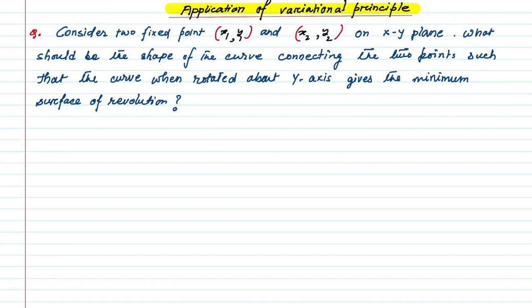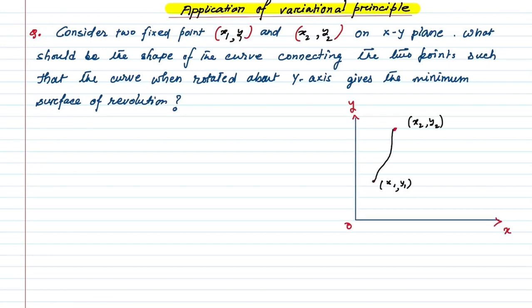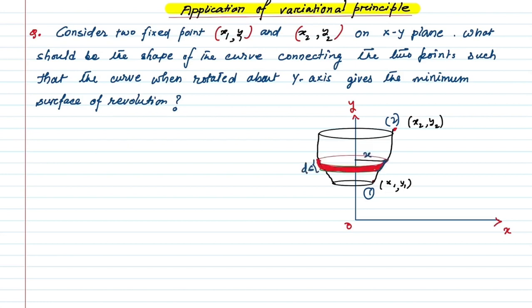Suppose we have the xy plane and on that plane we have two points x1, y1 and x2, y2. This is the curve connecting these two points, and when the curve is rotated about the y-axis it will take this shape. This is the geometrical shape formed due to revolution of the curve connecting point one and two. A strip shown in red is formed due to revolution of a very small element of the curve, ds.